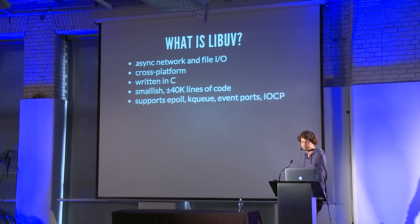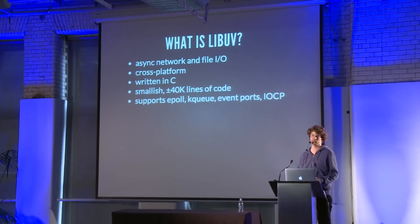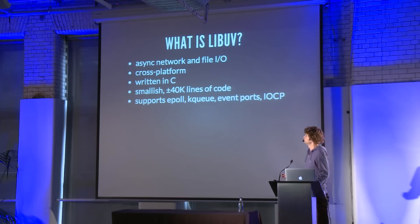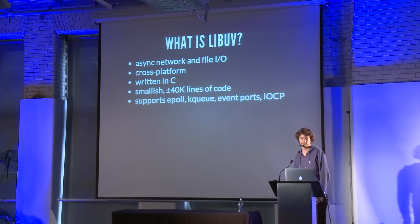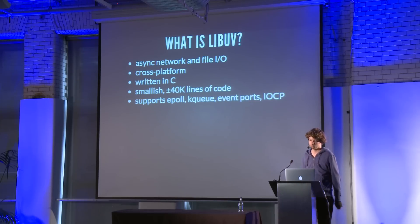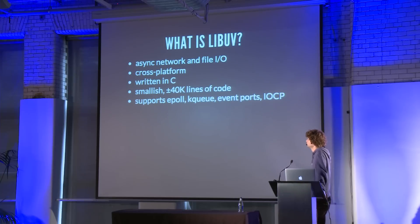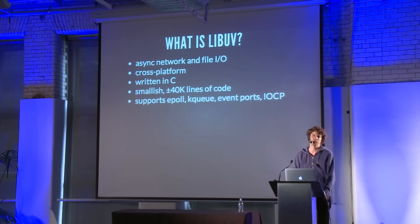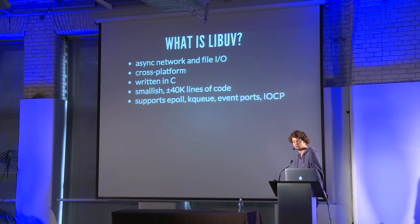For the things it does, it's fairly small — about 45,000 lines of code, and almost half of those are tests. So the actual library is just over 20,000 lines of code. It supports all the major APIs: ePoll on Linux, KQueue on the BSDs and OSX, event ports on Solaris, and IOCP on Windows. And if you have an AIX machine or HP-UX, it will use select or poll.